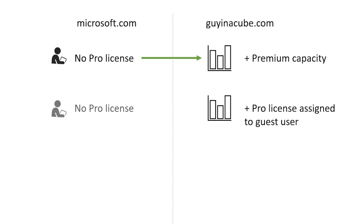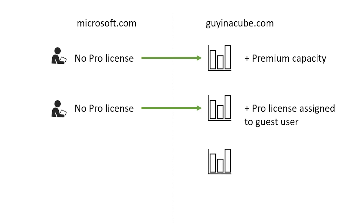The second option is you can assign a pro license from the Guy in a Cube side to that external user that you added to your Azure AD tenant. This means that when the external user accesses any content inside of Guy in a Cube, they will access it as if they are a pro user. That pro license does not give them rights in their tenant. And the last option is that within their tenant — on the Microsoft side in this example — they would have a pro license on that end and they would be covered, even when accessing content in the other tenant on the Guy in a Cube side. So either it's backed by premium capacity, either I assign them a pro license out of my tenant, or they come in already with a pro license.